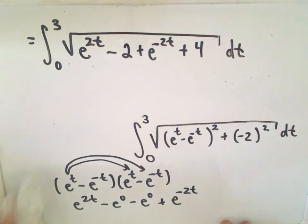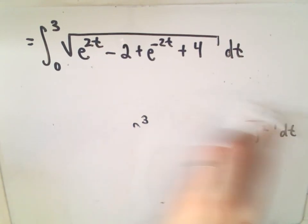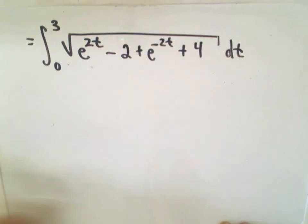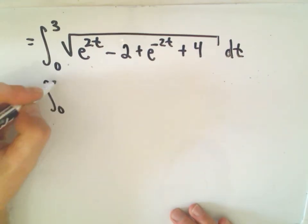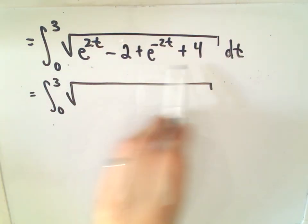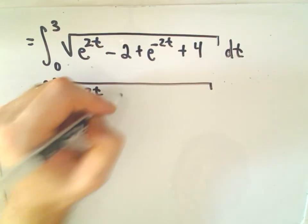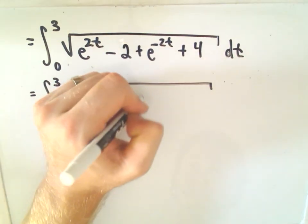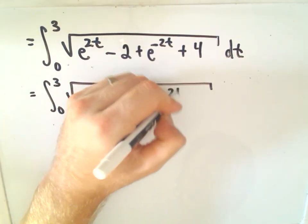Okay, so this looks kind of like a nasty little integral. You might think, what on earth to do here? And it just seems like this is a common little trick for these arc length problems. So, the first thing I'm going to do is combine negative 2 and positive 4. Well, that's going to give you e to the 2t plus 2, plus e to the negative 2t.